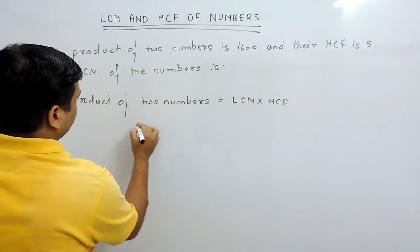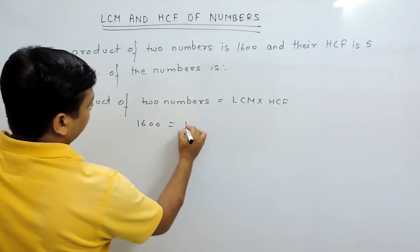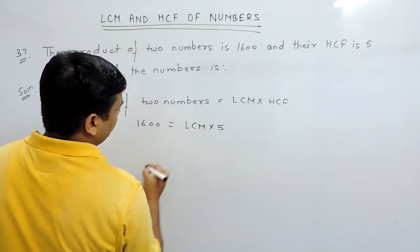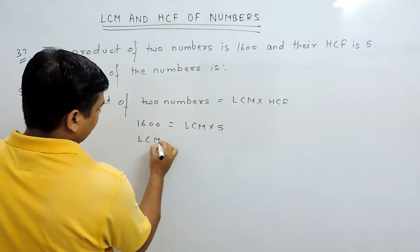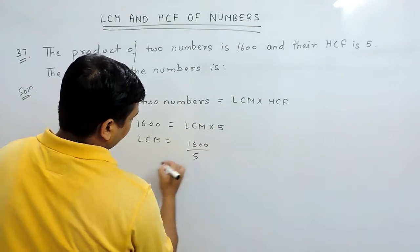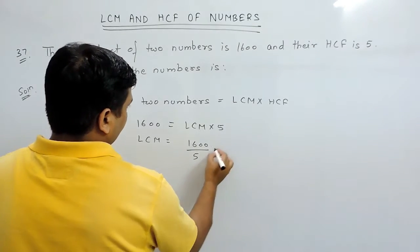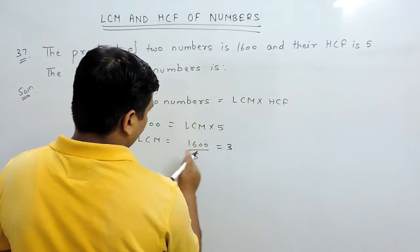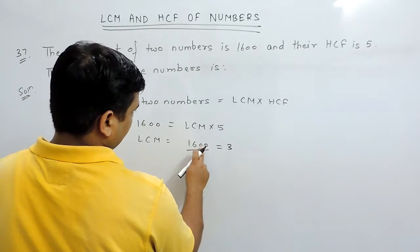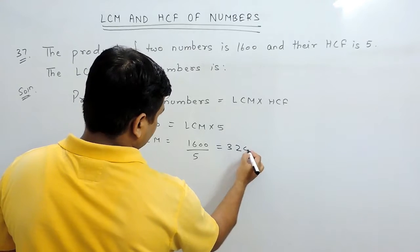And the product of two numbers here is 1600 and we have to find the LCM and the HCF is 5. Then the LCM will become 1600 divided by 5. When we divide 1600 by 5, this is 5, 3 times 15. Then it is 10, 2 times 10 and this is 0.